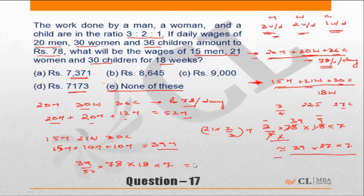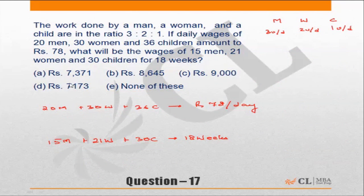Let's look at the last method, which is more time-consuming but suitable for those not very comfortable with ratios. We assume children do 1 unit per day, women 2 units per day, and men 3 units per day, as per the given ratio of 3 to 2 to 1. The question states 20 men, 30 women, and 36 children get 78 rupees per day. We need the salary for 15 men, 21 women, and 30 children for 18 weeks.